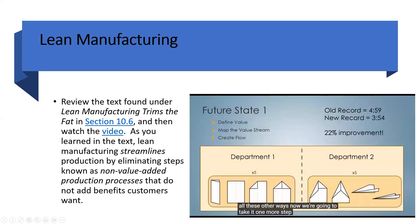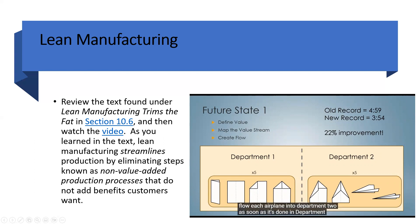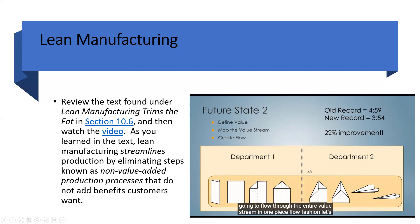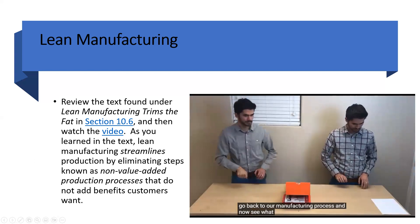Now we're going to take it one more step: not only are we eliminating the waste of motion within each department, but now let's make it flow between departments. We're going to flow each airplane into department two as soon as it's done in department one — that's one-piece flow. We're going to flow through the entire value stream in one-piece flow fashion.